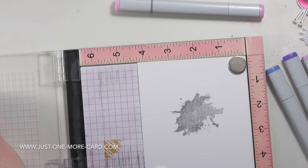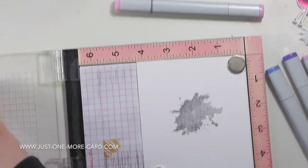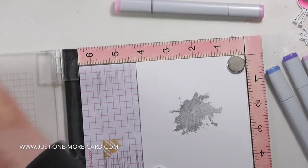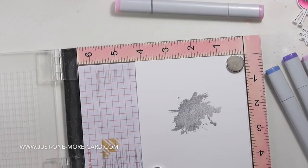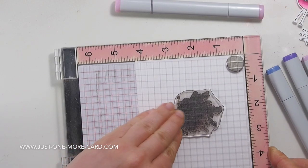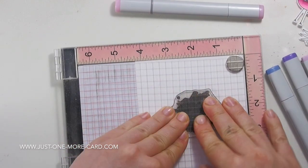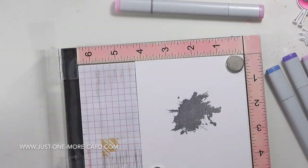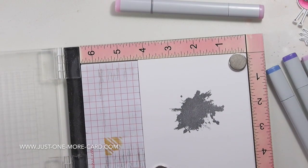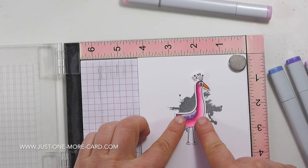I'm stamping the distress pattern here twice because the first time—it's a solid stamp—I didn't get a good impression. But thanks to the MISTI or whatever stamp platform you're using, you can easily stamp stuff twice and get a very solid impression. You can see here that just works really beautifully.